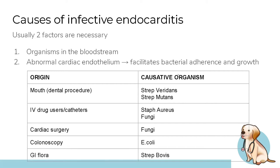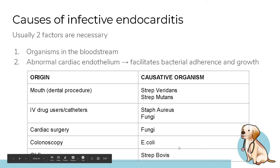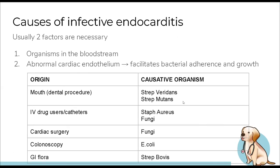For infective endocarditis to occur, you need two things: an organism somewhere in the bloodstream that reaches the heart, and something wrong with the cardiac endothelium — the lining of the cardiac tissue — that facilitates bacterial attachment and growth. Abnormal blood flow and stasis allow bacteria to adhere to the wall. Key pathogens from the mouth include Strep viridans and Strep mutans; after a dental procedure, these are the most likely causative organisms.